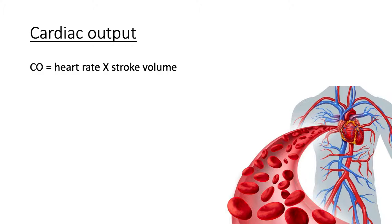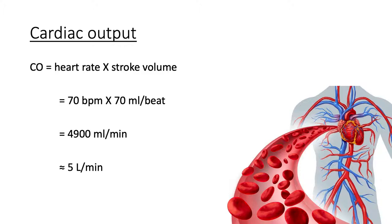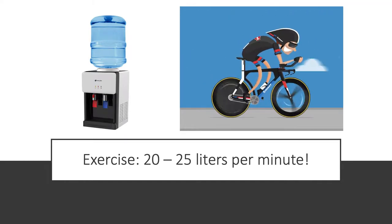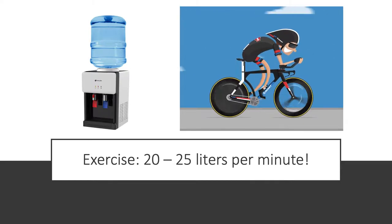Cardiac output equals heart rate times stroke volume: 70 beats per minute times 70 mL per beat equals 4,900 mL per minute, which is around 5 liters per minute. Our total blood volume is around 5 liters, so each half of the heart is pumping the entire blood volume in one minute at rest. When exercising, we can move 20 to 25 liters per minute — that's more than a 5-gallon water cooler, which holds about 19 liters.